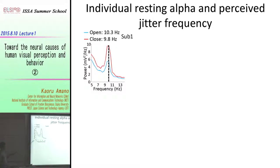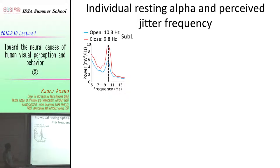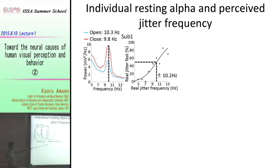This is an example of the frequency spectrum — this is the brain neural data. Red means the eye-closed condition and blue means the eye-open condition. We found a huge enhancement of alpha oscillation when you close your eyes, as reported in several literature. For this subject, the alpha frequency was found to be 10.3 hertz when they close their eyes. And the passive jitter frequency was found to be 10.2 hertz.